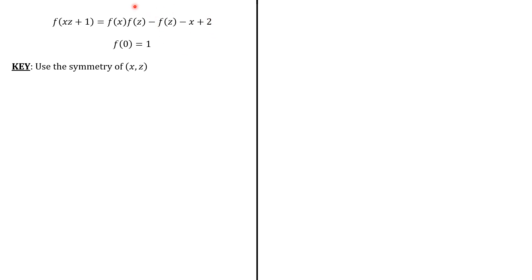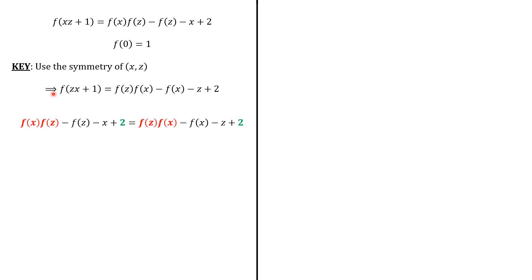What we do next is to switch the roles of x and z. Since both expressions equal the same number, we get this equality, and we see that terms of the same color — in red and in green — will cancel out each other. So, minus f(z) minus x equals minus f(x) minus z. Multiplying both terms by minus 1, we have f(z + x) equals f(x + z).